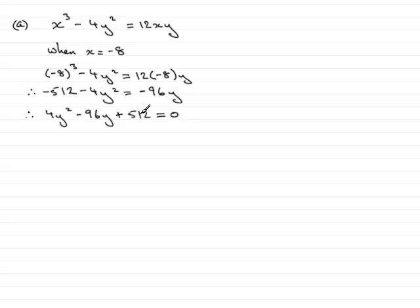I notice that 4 divides into each of the terms, so dividing through by 4, I get y² - 24y + 128 = 0.